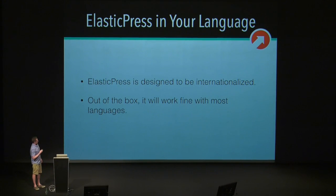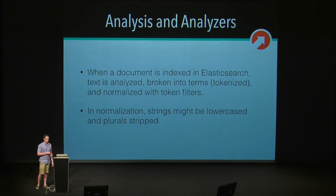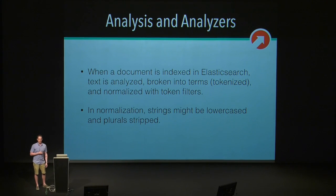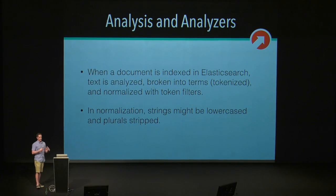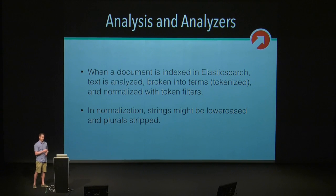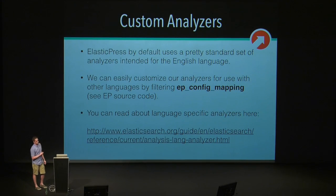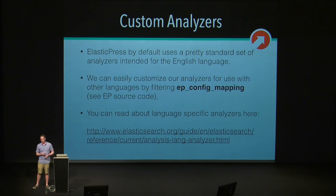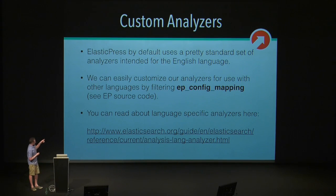ElasticPress is designed to be internationalized. Out of the box it works fine with most languages. Basically, when a document is indexed, it's tokenized and broken into terms — plurals are stripped out and prefixes are handled in a specific way, and all that by default is done in an English manner, which works fine for most languages. But for certain languages you'll be better off specifying your own analyzer. Analyzers are available in most major languages. To do that with ElasticPress, all you have to do is filter EP_config_mapping and you can tweak it to use whatever language you want.